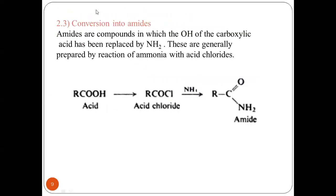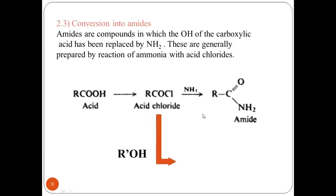Third is conversion of carboxylic acids into amides: RCOOH is converted to RCONH₂, meaning the OH group is replaced with NH₂. These are generally prepared by the reaction of ammonia with acid chlorides.